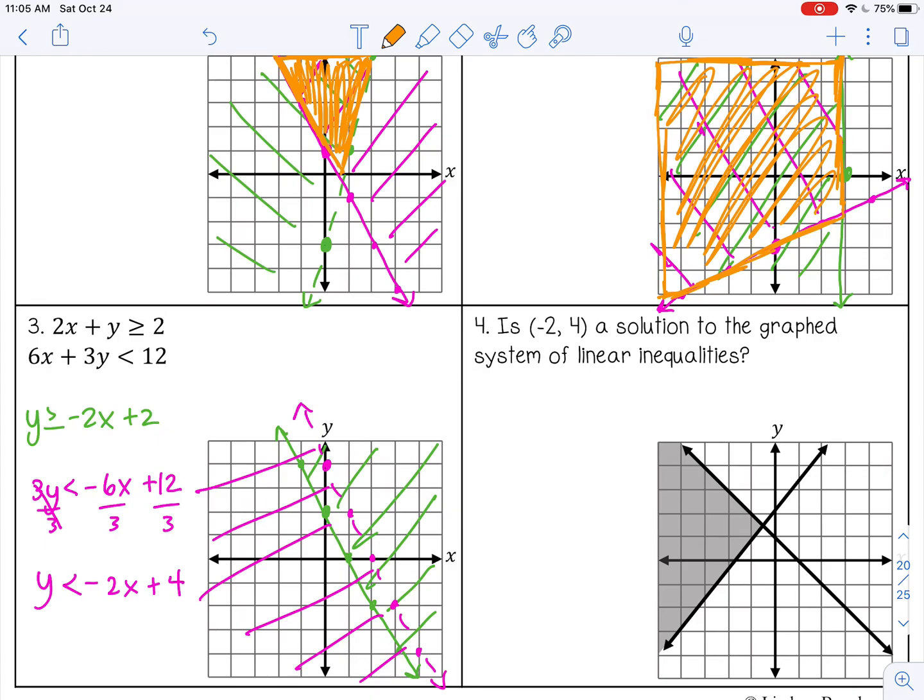So, my solution here is this little sliver, not including the pink line, but it does include the green line in here.